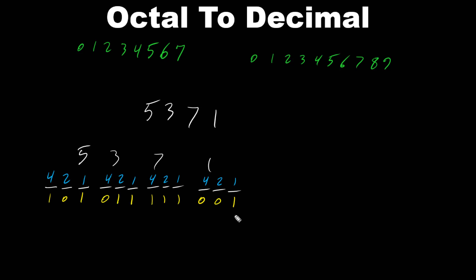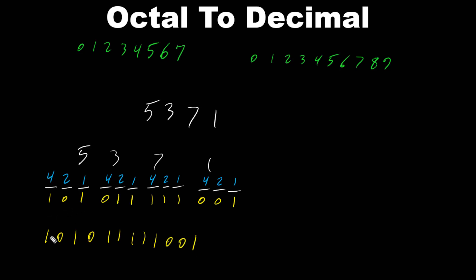This gives us our binary. Now we can put these binary groups together: 1, 0, 1, 0, 1, 1, 1, 1, 1, 1, 0, 0, 1. Let's double check — that's 1, 0, 1, 0, 1, 1, 0, 1, 1, 1, 1, 0, 0, 1.